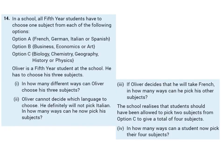Question 14. In a school, all fifth-year students have to choose one subject from each of the following options. From option A, they can choose French, German, Italian, or Spanish. From option B, they can choose business, economics, or art. And from option C, they can choose biology, chemistry, geography, history, or physics.